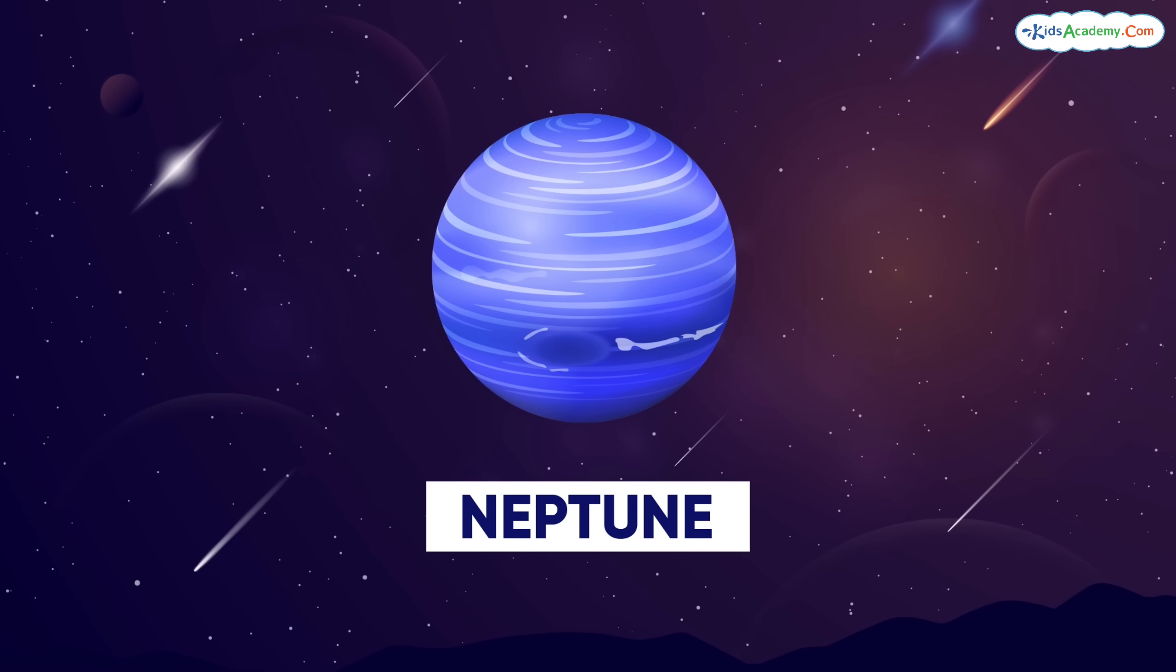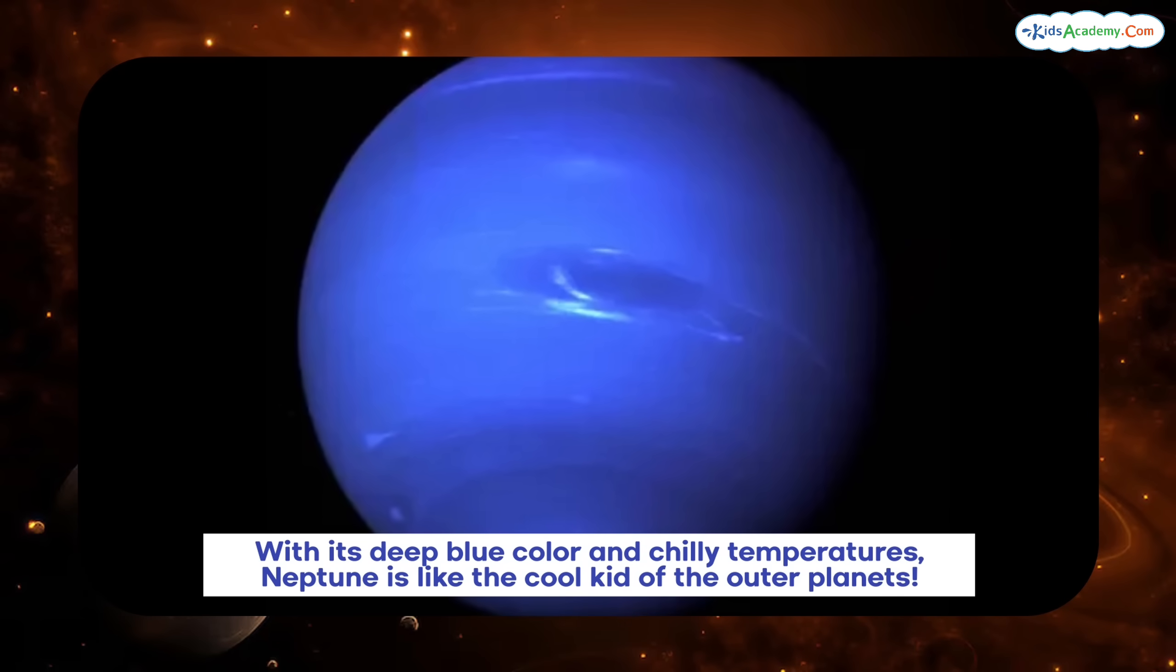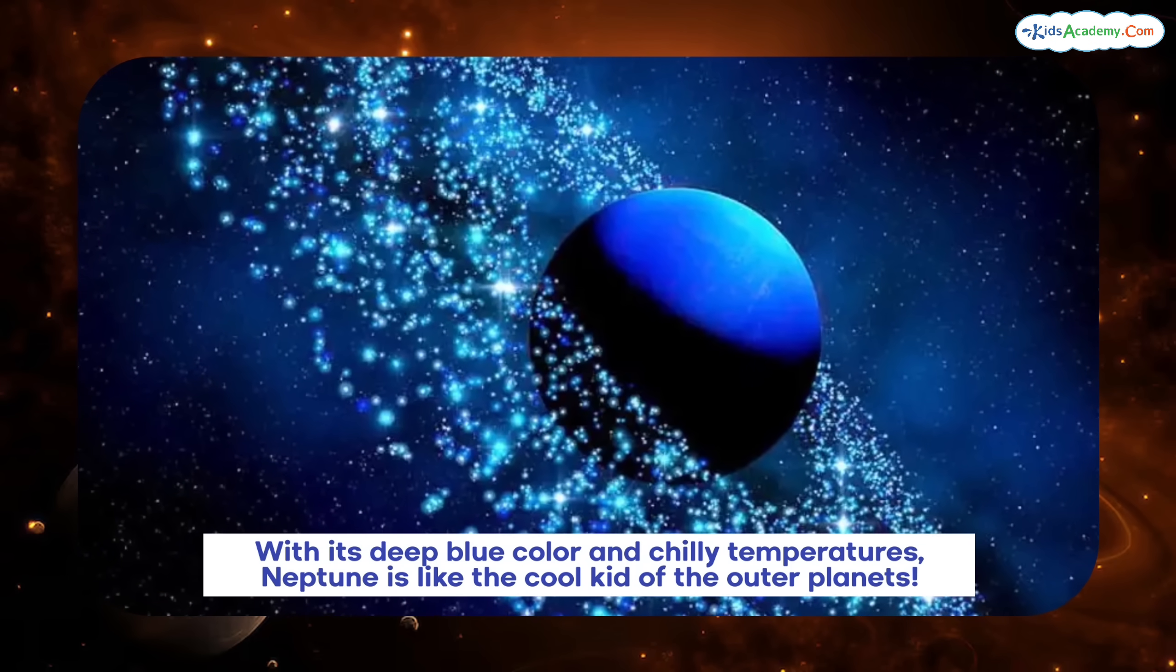Last but not least, we've got Neptune, the icy giant at the edge of the solar system. With its deep blue color and chilly temperatures, Neptune is like the cool kid of the outer planets.